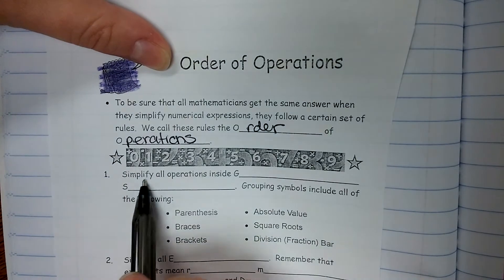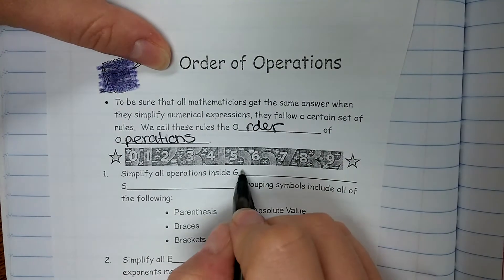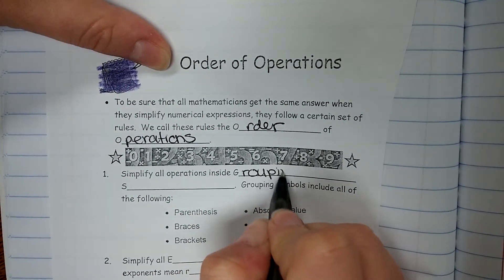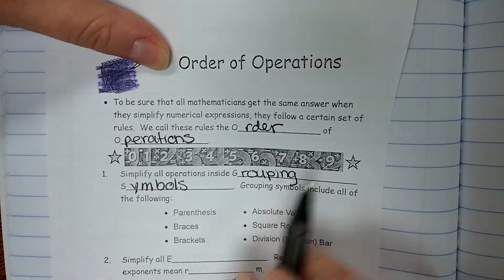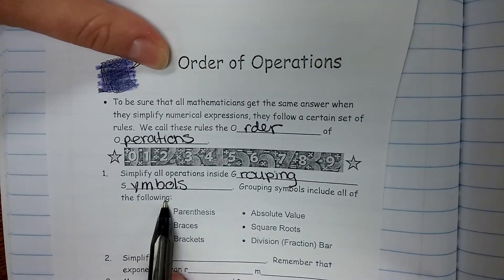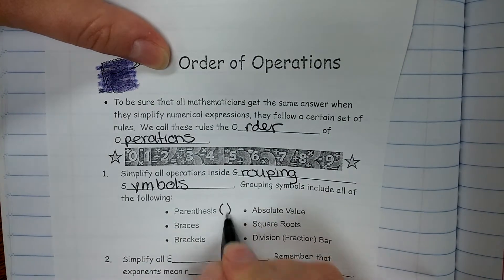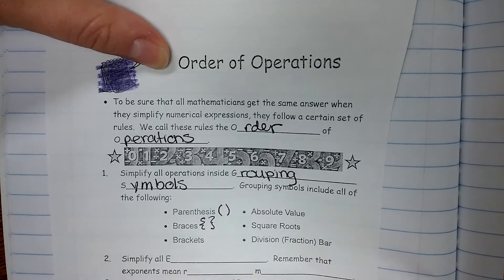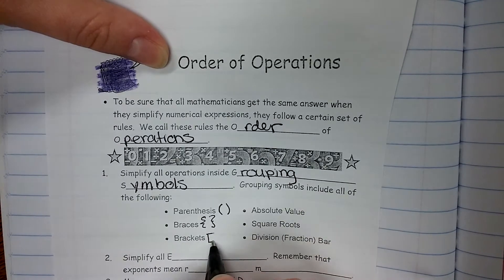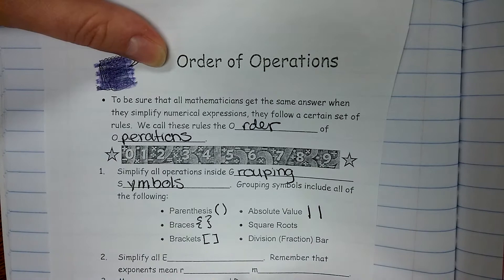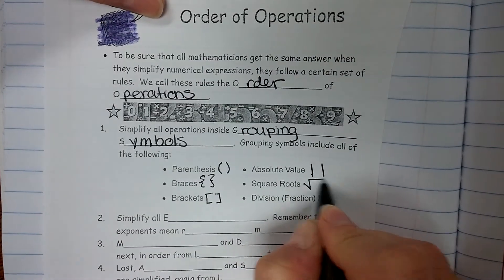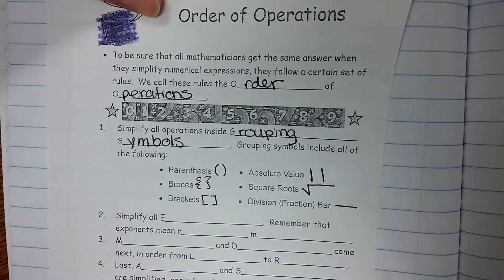Simplify, number one, simplify all operations inside grouping symbols. And grouping symbols include all of the following items: Parentheses, braces, which are kind of like squiggly parentheses, brackets, which are square parentheses, absolute value, which we know two straight lines, square roots, and the fraction bar.